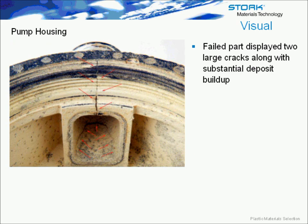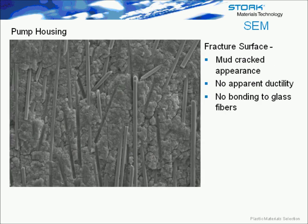Along with the cracking, it's obvious that there was a substantial buildup of a deposit on the inside surface of this pump housing. We opened up a crack, cleaned it off, gold-coated it, and then looked at it with a SEM microscope. Basically, what we see here is a very mud-cracked appearance with glass fibers just laying on the surface. There's no apparent bonding of the glass fibers, no apparent ductility of the resin, and it's very characteristic of brittle fracture with some chemical effects. We did a laboratory fracture in-house to see how the material would look under overload — you see definite bonding to the glass fibers and ductility of the resin, with long fibrous strands whisking away. It kind of looks hairy.